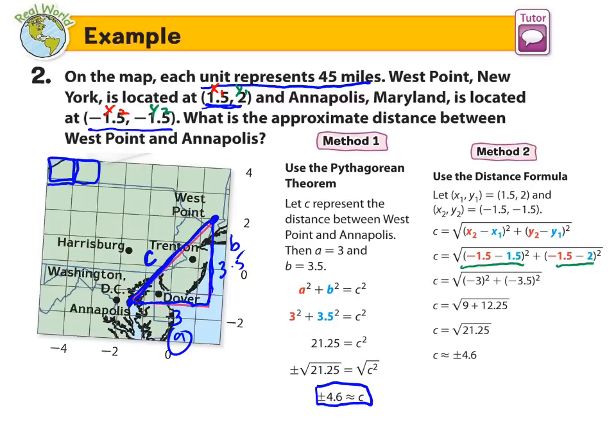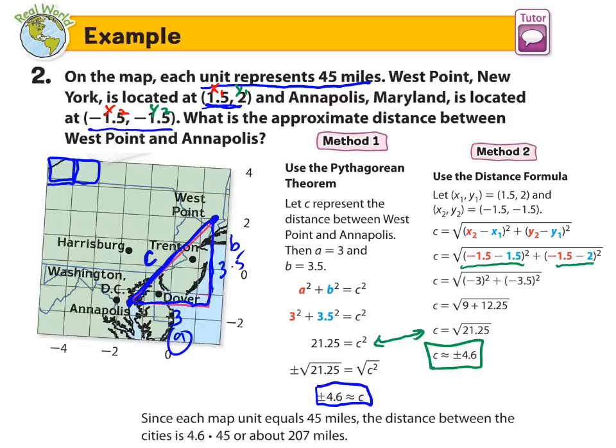Simplify that. -1.5 minus 1.5 is -3, -3 squared, plus -1.5 minus 2 is -3.5 squared. So we end up with -3 squared is 9, -3.5 squared is 12.25. So you can see these are exactly the same. We're looking for the square root of 21.25, which is positive and negative 4.6. So since each map unit equals 45, the distance between the cities is 4.6, which represents the units, times 45, or 207 miles.